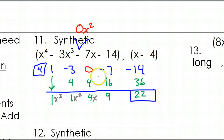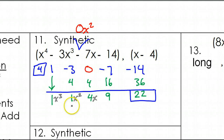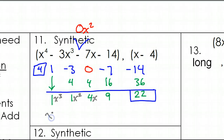When you're doing synthetic division, the degree is always going to go down by 1. So if you had x to the fourth power, your new polynomial will have degree 3. So let's just recopy this nice and pretty. We will have x to the third power plus x squared plus 4x plus 9.